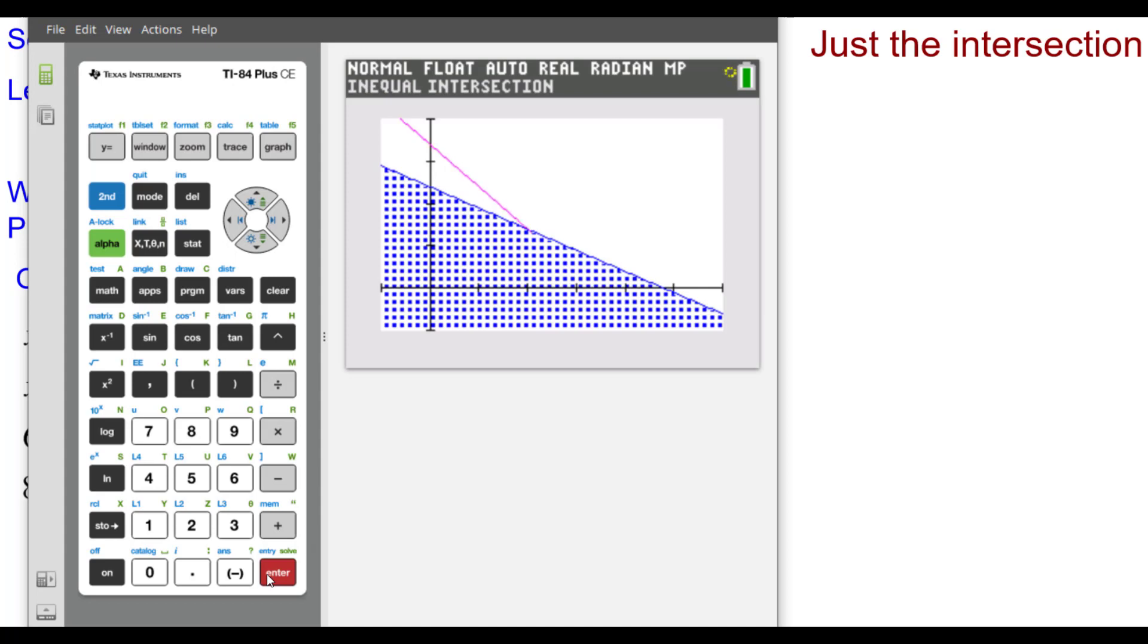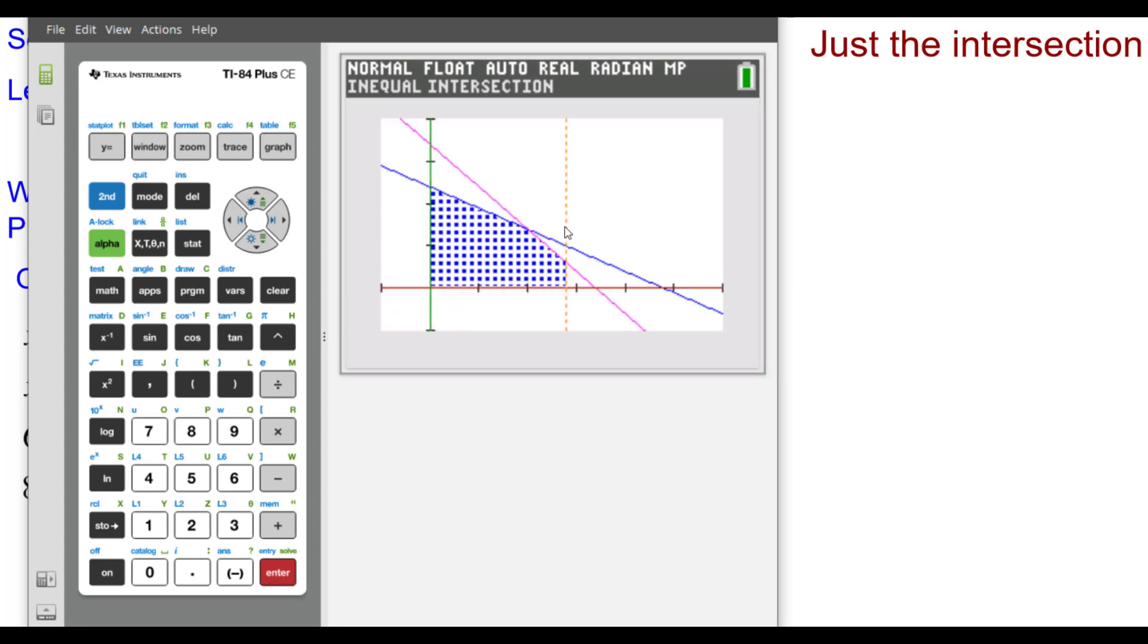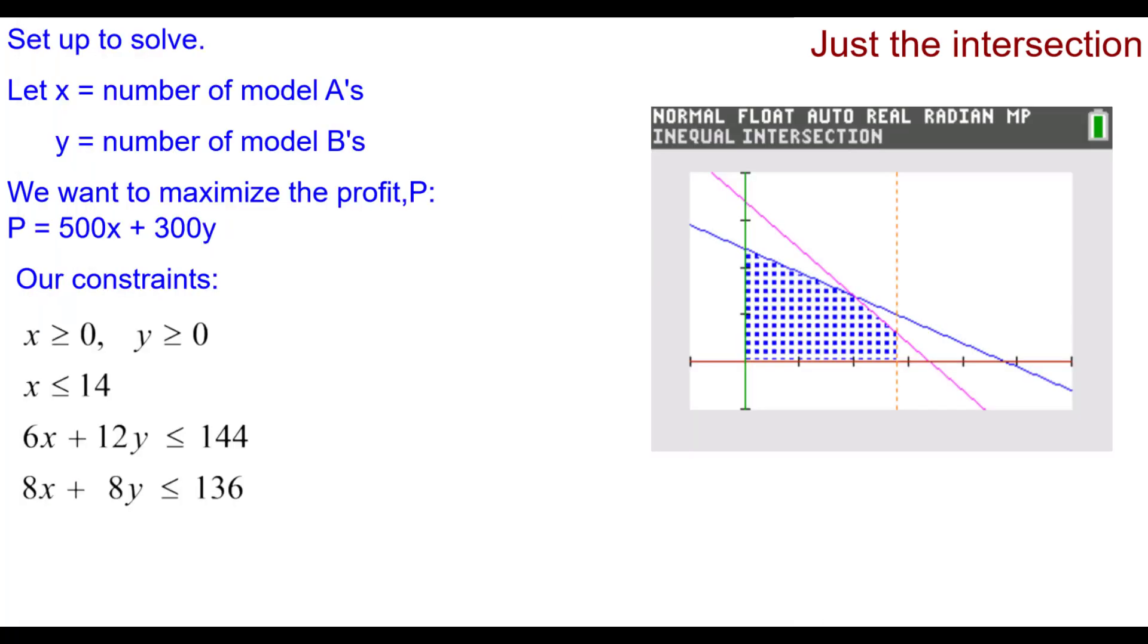So let me go ahead and press Enter. So it redraws it but just shows the intersection or the feasible region as we call it. And here it is.